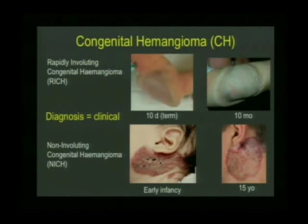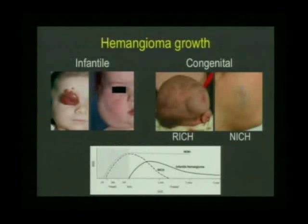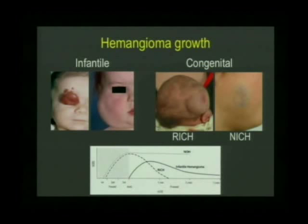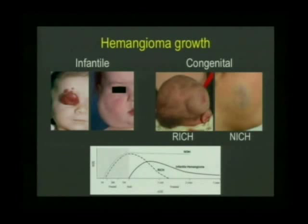Looking at growth curves for these vascular tumors: the infantile hemangioma shows postnatal proliferation followed by involution. Congenital hemangiomas exhibit in utero growth and are maximum at birth. The NICH is a fairly flat lesion that persists throughout life — a very typical location is on the face. The RICH undergoes spontaneous involution, typically over about 12 months, sometimes slightly over 14 or 15 months. Infantile hemangiomas may be superficial, showing a skin color change, or deep — such as a parotid hemangioma causing facial enlargement without skin color change.